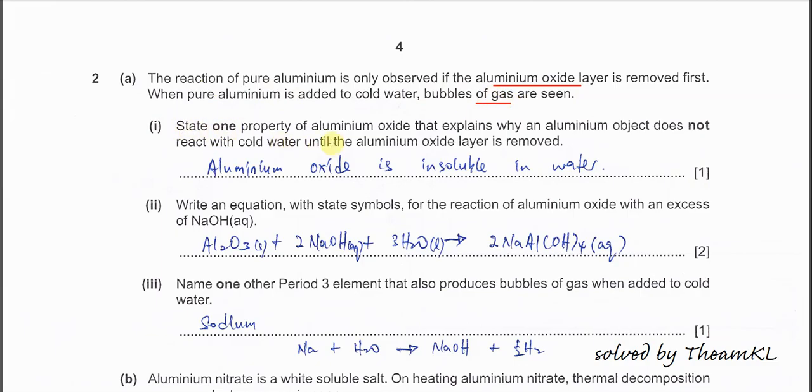State one property of aluminum oxide that explains why an aluminum object does not react with cold water. It's very easy. Across period three, only two oxides will not dissolve in water: aluminum oxide and silicon oxide or silicon dioxide. So the answer is very easy. Aluminum oxide is insoluble in water. That's why it will not react.